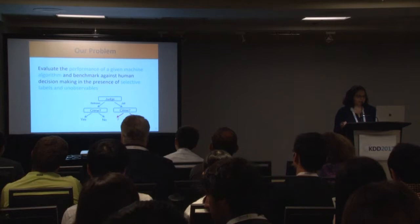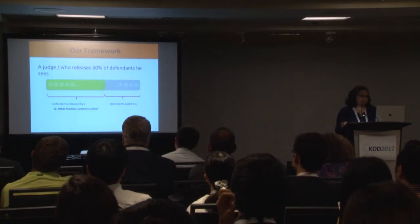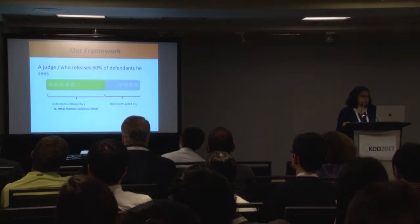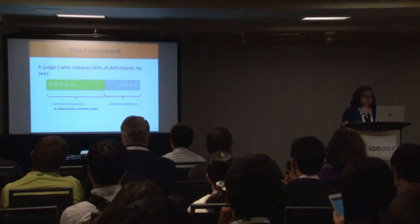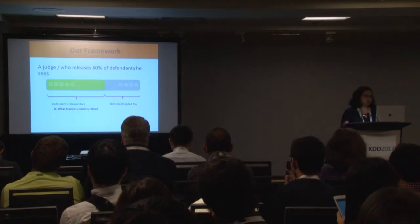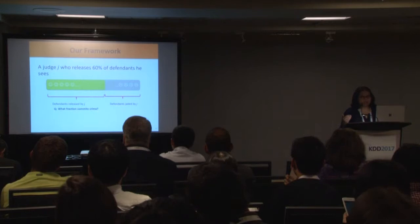Before discussing our approach, let's clarify what we are comparing against. Consider Judge Jay, who releases 60% of the defendants he sees. The green set comprises defendants released by the judge, and the gray set those jailed. The goodness of decision making is quantified by the fraction of crimes committed by released defendants — the smaller the crime rate, the better the decision making.